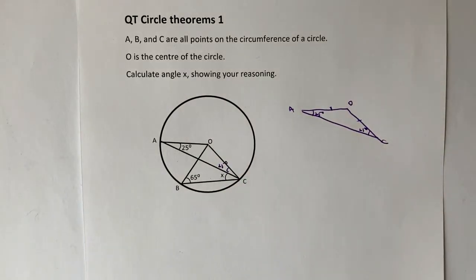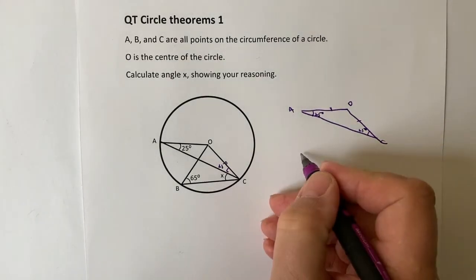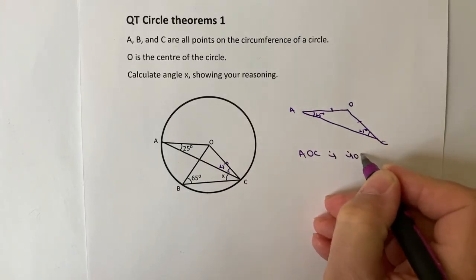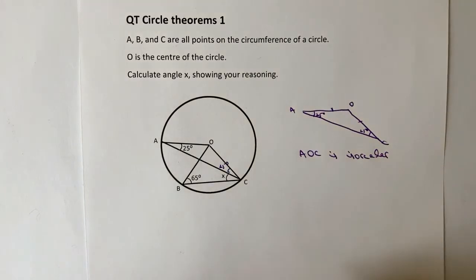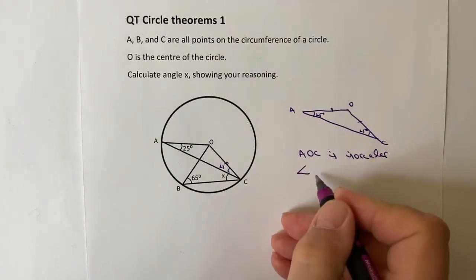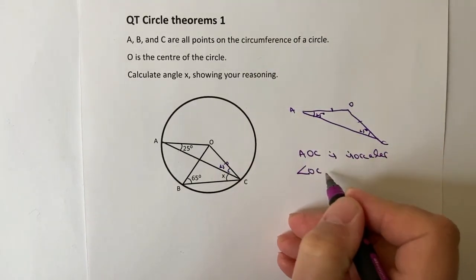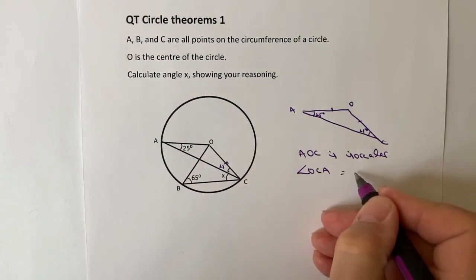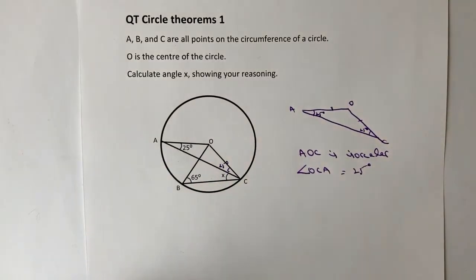Hopefully you can see that. So if you were being asked for showing your reasoning, yes, you could do a little sketch like that. No problems at all. Or if you want to put it in the way that they want it in the exam, you could write something like AOC is isosceles. And angle OCA, which is this angle here, is equal to 25 degrees. That's the first part of it.